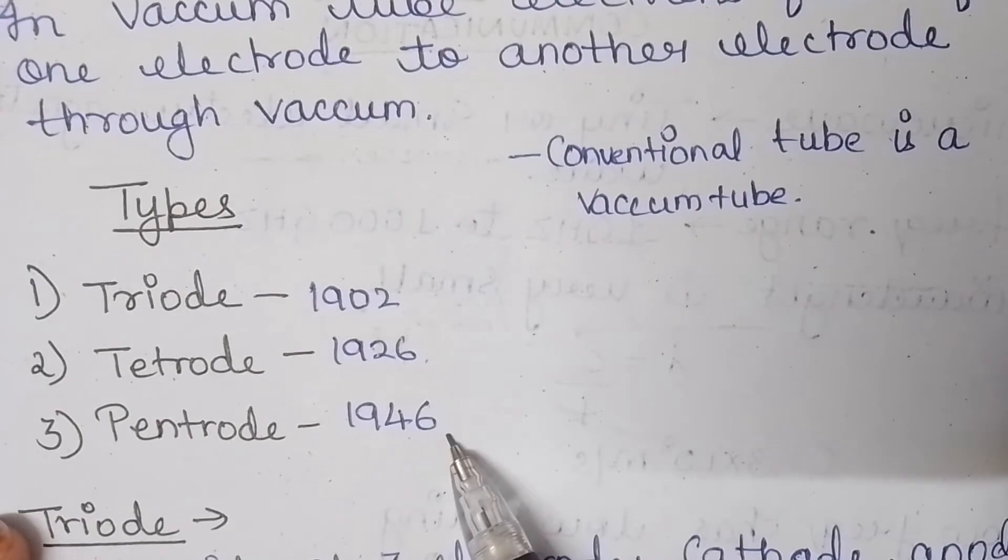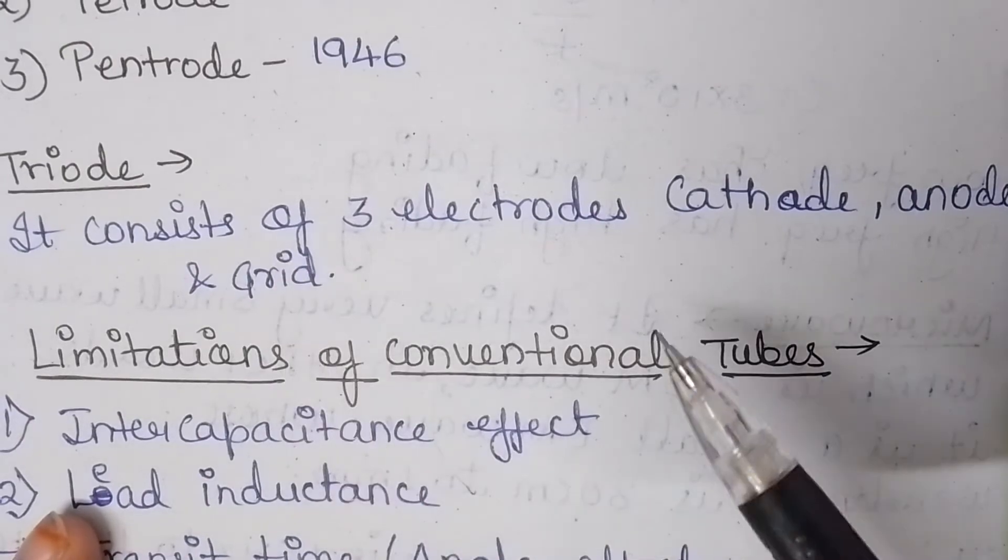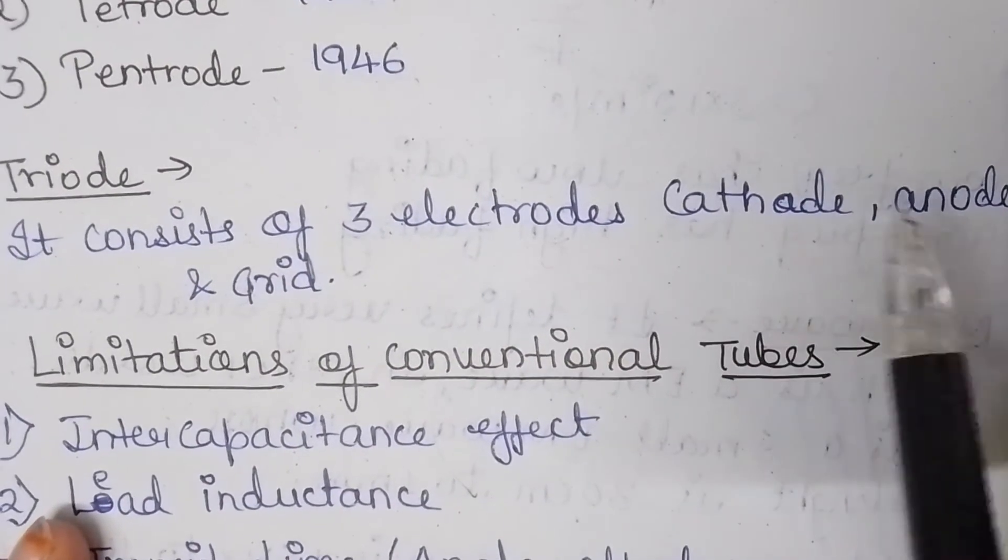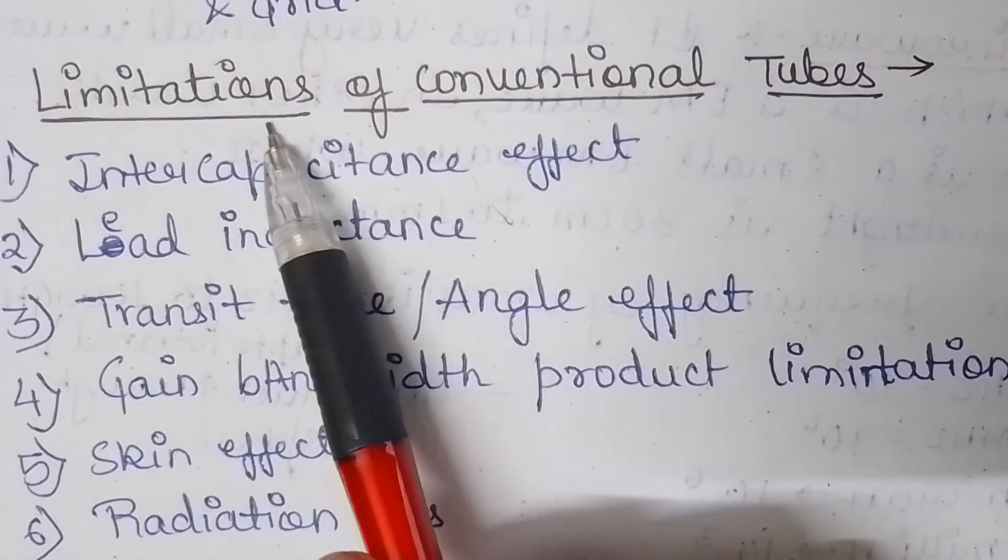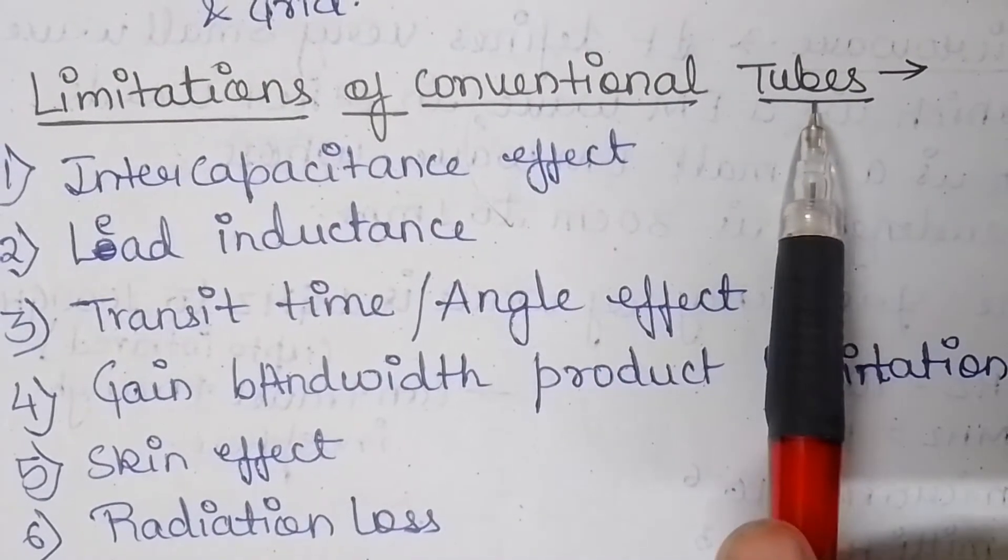Now what is a triode? Triode is a vacuum tube and it consists of three electrodes: cathode, anode and a grid. Now the next topic is about the limitations of conventional tubes or why these conventional tubes are not being used nowadays.